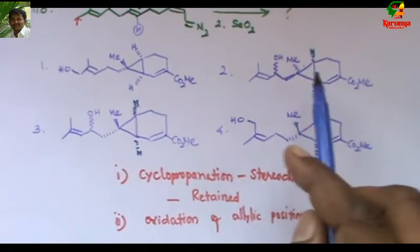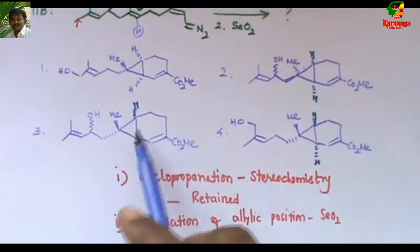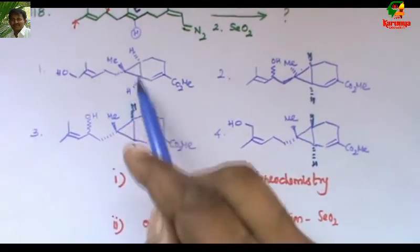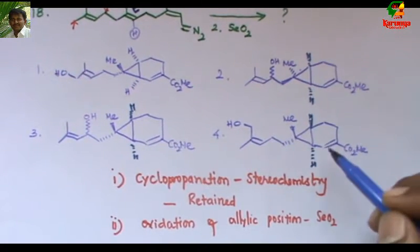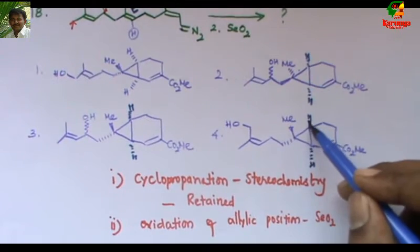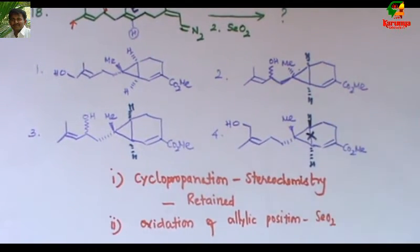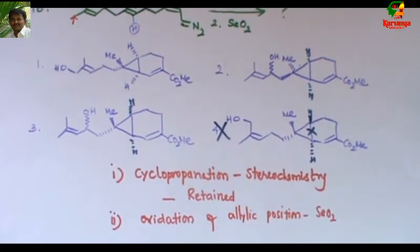In the first three, the stereochemistry is cis. You can see here all the hydrogens at the fused junction are cis. But in the fourth one it is trans, that is not possible. So this option is not possible.